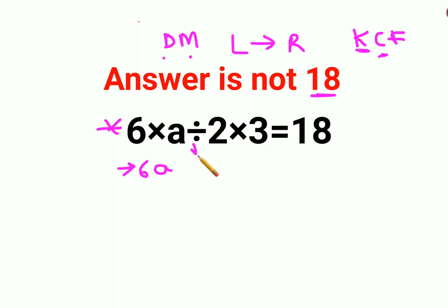C stands for changing the division sign to multiplication and F stands for flipping or taking reciprocal of 2, that is 1 upon 2 into 3. And everything is equals to 18.